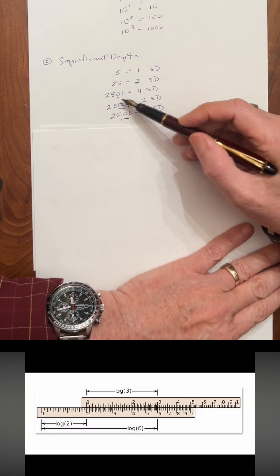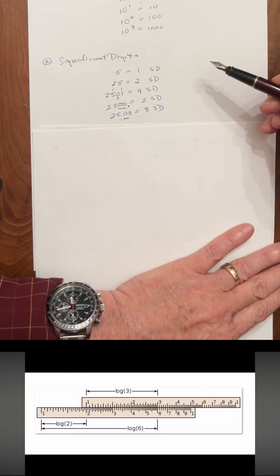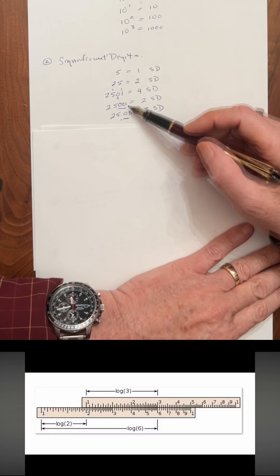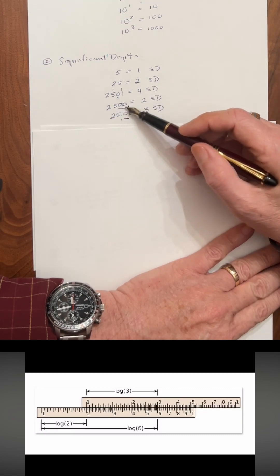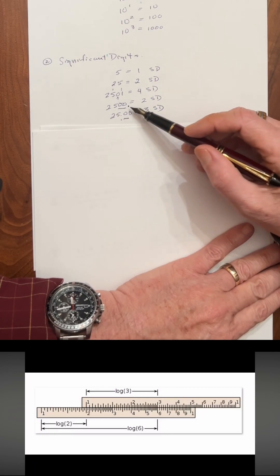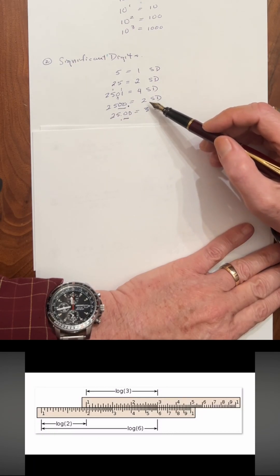Now, this zero right here, because it's got a non-zero number on either side of it, is a significant digit. However, 2500 followed by a decimal point means that these last two zeros are not significant. So 2500 would only have two significant digits.